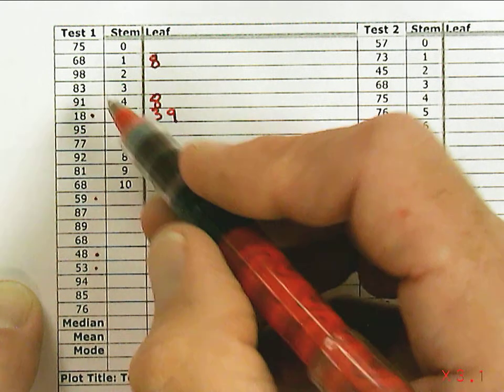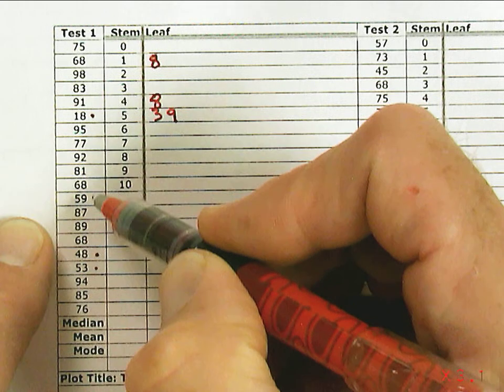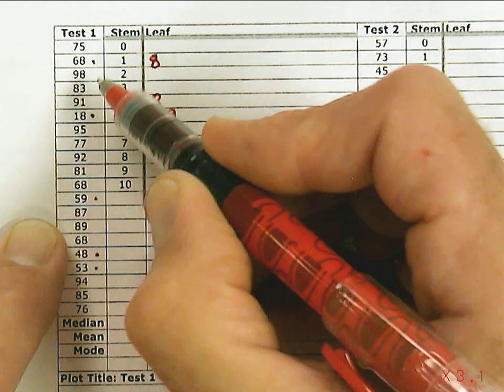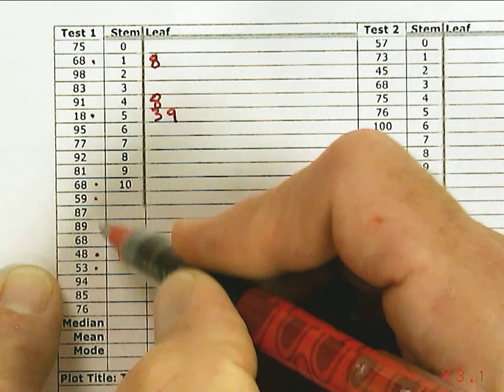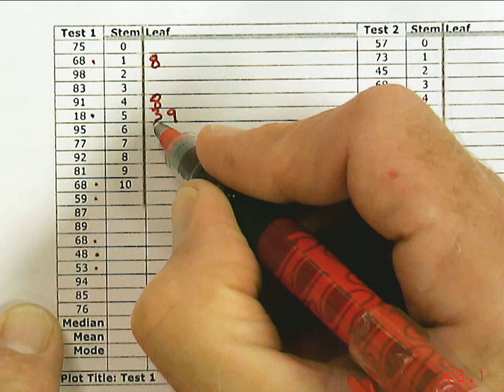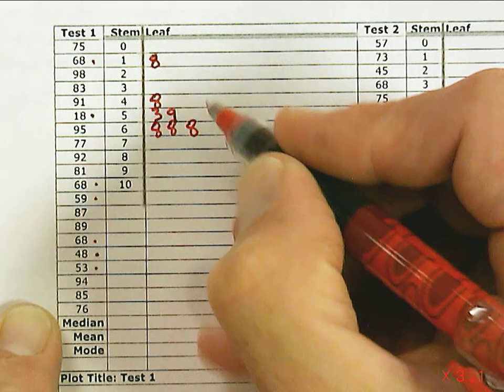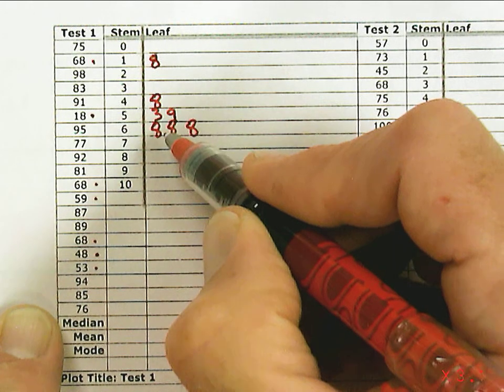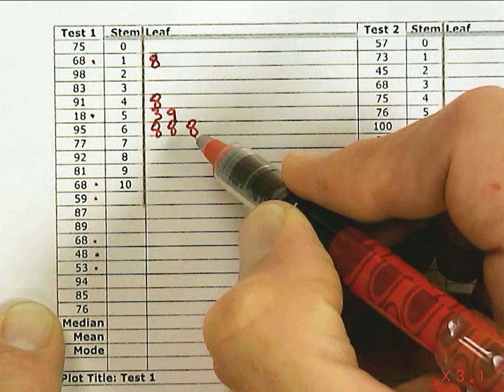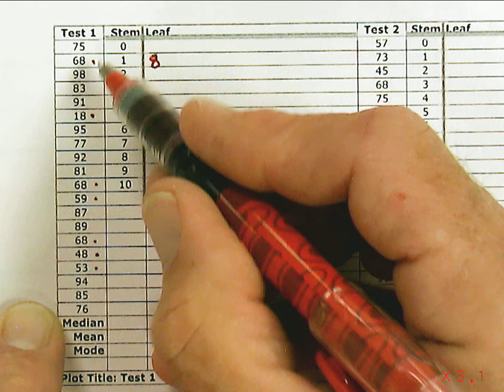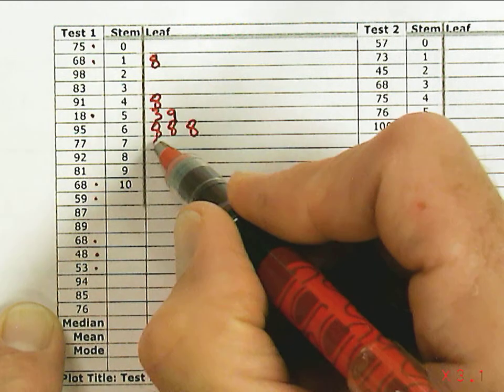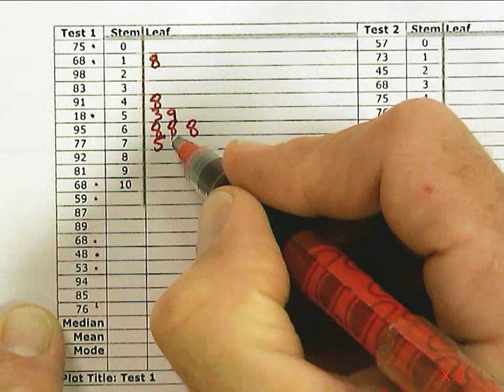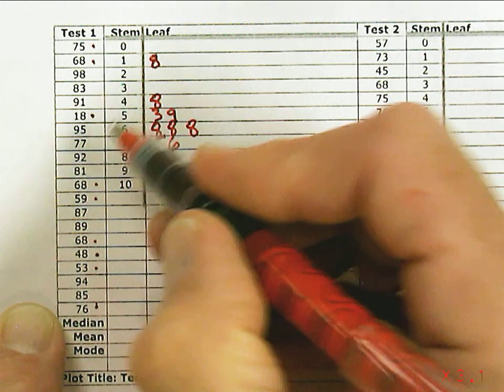After 59, in the 60s, the smallest 60 is 68. There's 1, 2, 3 68s. So 68 appears more than once, so we list it all three times. We're not going to just list a number once. If it appears more than once, we list it as many times as it shows up.